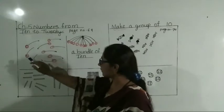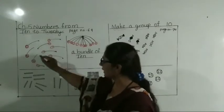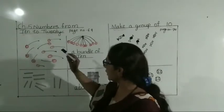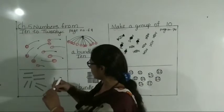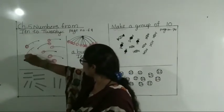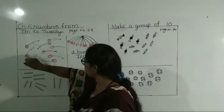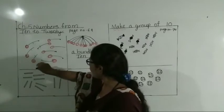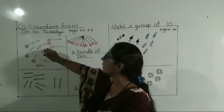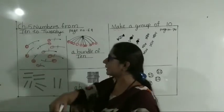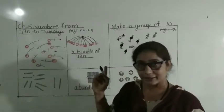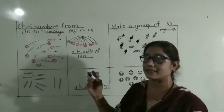Here some cherries are there. How many cherries are there? See here, students: 1, 2, 3, 4, 5, 6, 7, 8, 9, 10. How many cherries are there here? 10 cherries.